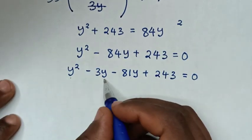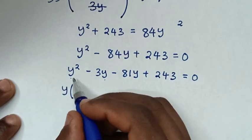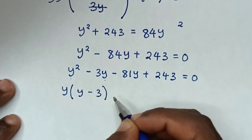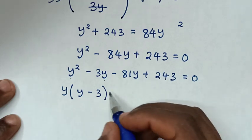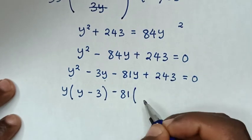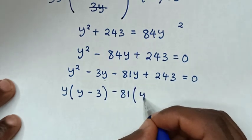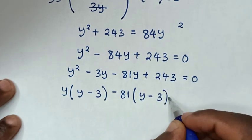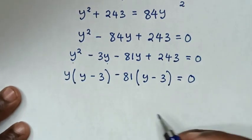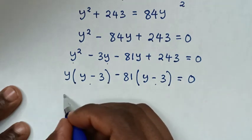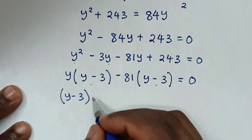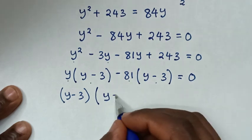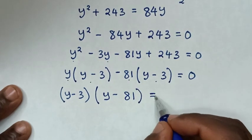In the first group, y is common, so we take y out: y times (y minus 3). In the second group, negative 81 is common: negative 81 times (y minus 3), equal to 0. Then (y minus 3) is common, so we factor it out: (y minus 3)(y minus 81) is equal to 0.